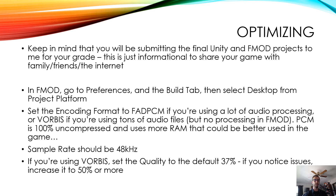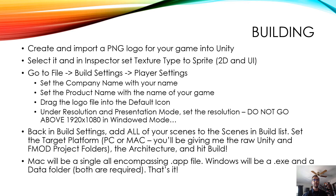Then we'll go to Unity and build the game. To build the game, first and foremost, you're probably going to want to have a logo for your game that you can load into Unity. So create a logo and save it as a PNG, then import that into Unity. Select your logo in Unity, and in the Inspector, set the texture type to Sprite, 2D, and UI.